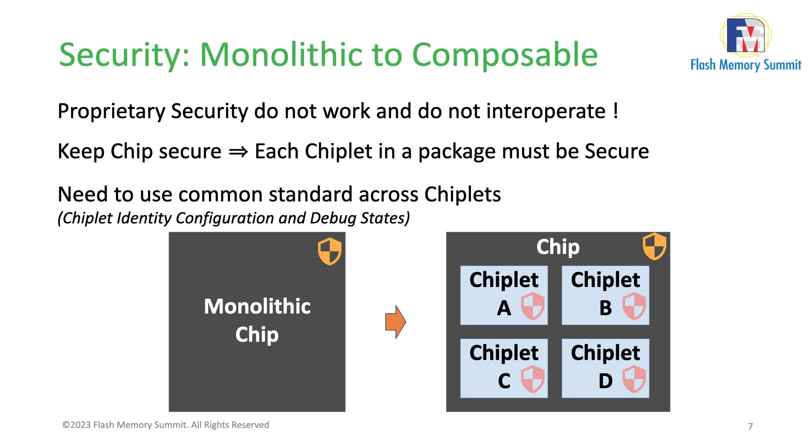For example, an accelerator on your package could be exploited to attack your CPU — you don't want that exploit to bring down your whole system. So our threat model includes the scenario where one chiplet inside your package is compromised. This is a very complex topic, and we really encourage more people to join the UCIe consortium to work on all of this. I kept this presentation high-level, but I'm happy to discuss threat models in more detail.